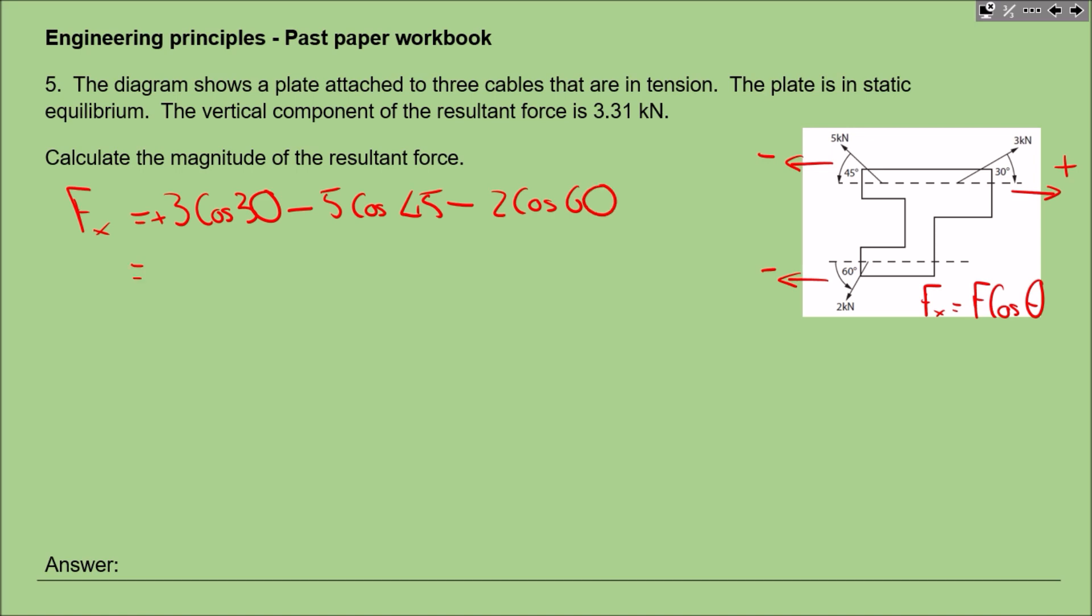You can put all this in your calculator at once if you want. If you do that, make sure you put brackets around these so it doesn't confuse the calculator or yourself. You can work them out separately and write them in, like I'm going to do. Three cos 30° works out to 2.60—two decimal places will be sufficient. We're going to minus 3.54 and minus 1. Double-check these numbers. Now we find the sum of these forces: 2.6 minus 3.54 minus 1, which gives us minus 1.94 kilonewtons.